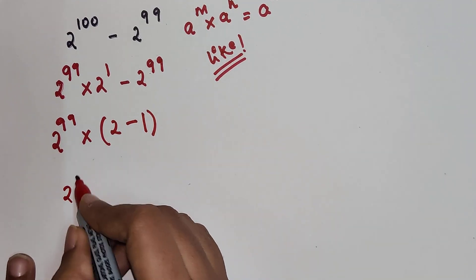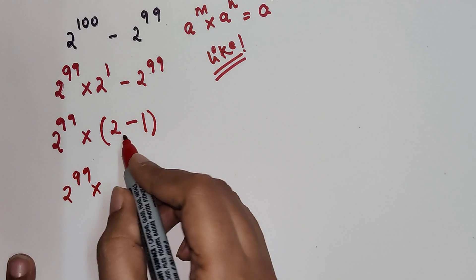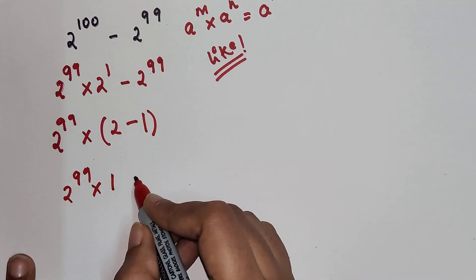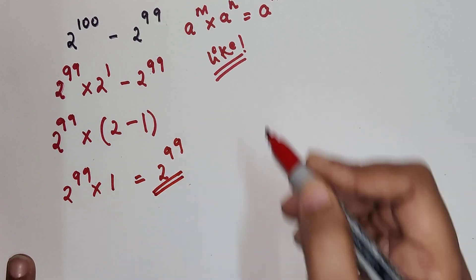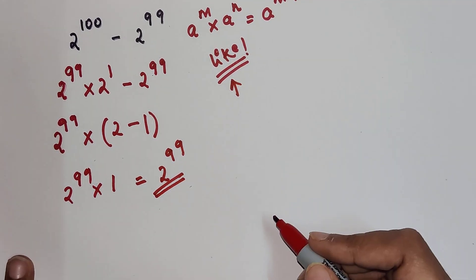So we have 2 raised to 99 times 2 minus 1, which is nothing but 1. So final answer for this one is 2 raised to 99. Do like and subscribe for many such videos.